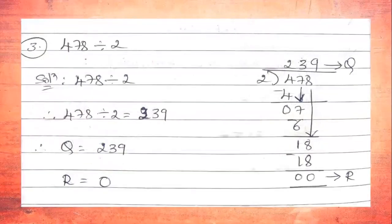The third problem: the given number is 478 divided by 2. We write the solution: 478 ÷ 2. The division is shown in the rough column to the right side. Here 478 is the dividend and 2 is the divisor. We have to find the quotient and remainder. The divisor is 2, so we read the 2-times table.